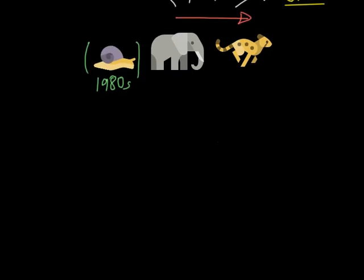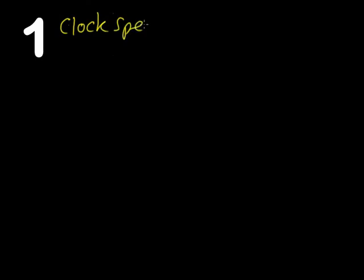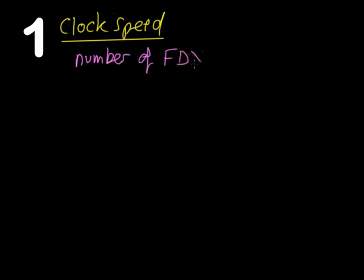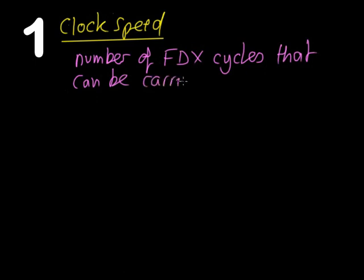Let's start with clock speed. If you've watched the video on the CPU components, you'll be familiar with the fact that the CPU has a clock in it, and the clock pulses to keep everything in time. It also controls the speed of the fetch, decode, execute cycle. So literally, the clock speed tells us the number of FDX — that's fetch, decode, execute — cycles that can be carried out per second.